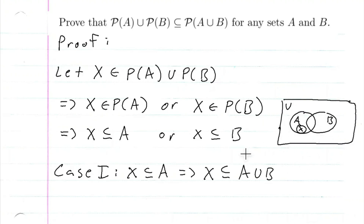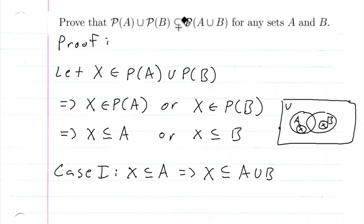But this is where it breaks down, because I can't do an if-and-only-if here — I can only do an implies — because does X being a subset of A union B imply that X is a subset of A? Well, if X were in here, X is a subset of A union B, but we can see that X is not necessarily a subset of A. So we can't write this, because this statement does not imply this statement. That's why we're restricted to subset rather than equality. Anyway, we know this implies that X is an element of the power set of A union B. So for the first case where X is a subset of A, we get X is an element of the power set of A union B.